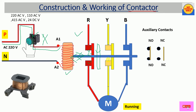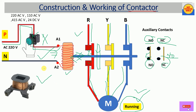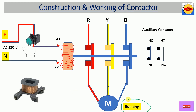At the same time, the auxiliary contacts also change state — the normally open becomes normally closed and the normally closed becomes normally open. In this condition the contactor allows the three-phase power to flow to the output side and the motor reaches running condition, because we are still pressing the normally open push button and still giving power supply to the contactor coil. We haven't implemented a holding or latching circuit yet — that will be discussed in the next video.